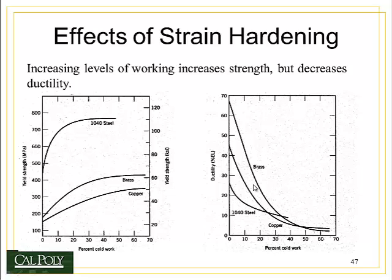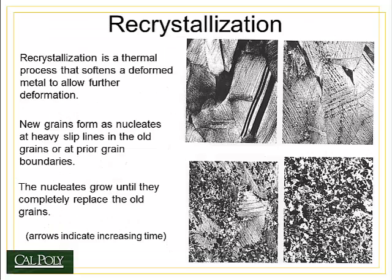Notice what happens to the ductility of these materials. Steel, copper, and brass all lose their ductility, and all three drop below 10% ductility at about 30% cold work or higher. That means these metals would be unusable for most engineering applications, since engineers stay away from metals with ductilities less than about 10%.